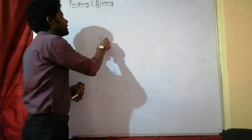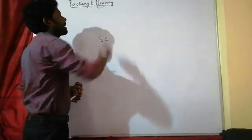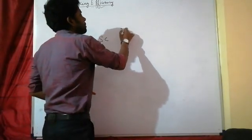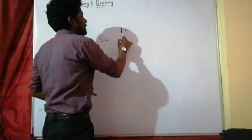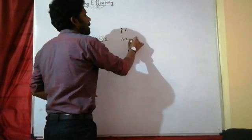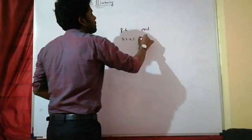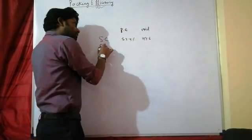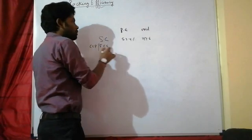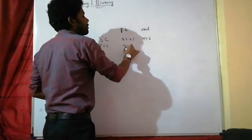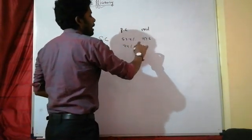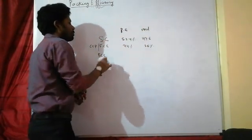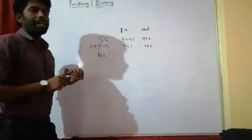For simple cubic packing, the packing efficiency is 52.4% and voids are 47.6%. For FCC, which is also known as CCP, packing efficiency is 74% and voids are 26%.